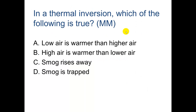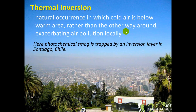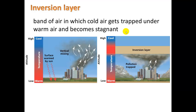In a thermal inversion, high air is warmer than low air, so they don't mix, and smog is trapped below the warm layer. Here you can see Santiago, Chile as an example. These are natural occurrences depending on weather and geologic features like mountains. Normally, lower air is warmer because it's being heated by the surface and rises, carrying pollutants with it. But in some cases, the air above is warmer and the air below is colder — they're already separated with no mixing — and pollution gets trapped underneath that layer.